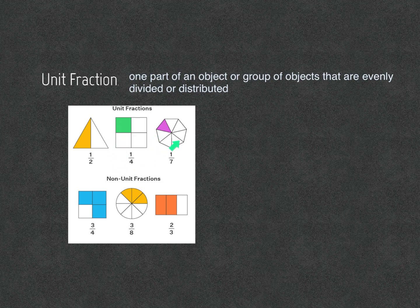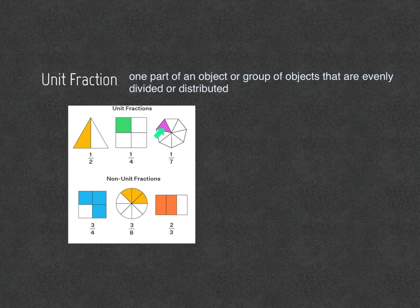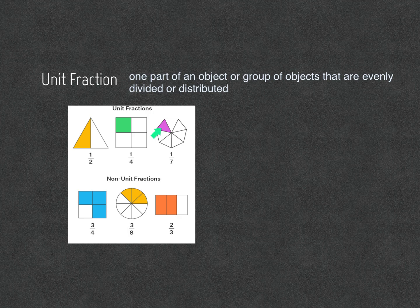This one is the same way. One triangle is shaded out of one, two, three, four, five, six, seven. So one over seven.